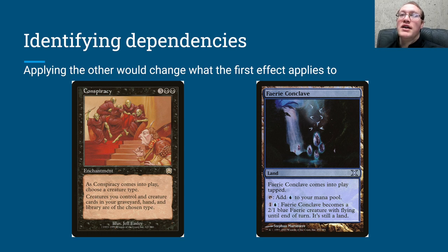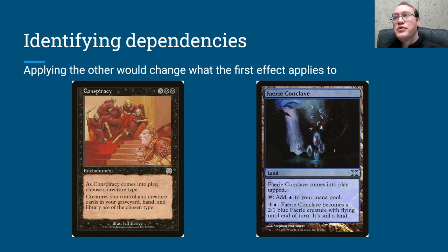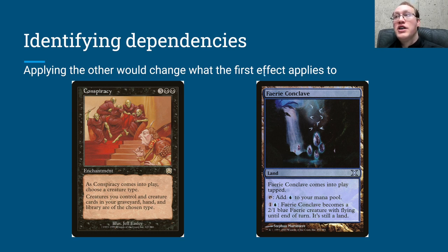Another thing that could happen: applying the other would change what the first effect applies to. Here we have Conspiracy and Fairy Conclave. These are both type, subtype, or supertype-changing effects. If we have Fairy Conclave and we animate it, that is going to change it from being a land to being a land creature. That would mean that Conspiracy — which only applies to creatures and not lands — is going to have the things it applies to changed. We go from Fairy Conclave not being affected by Conspiracy to being affected by Conspiracy. So the Conspiracy depends on Fairy Conclave, because applying Fairy Conclave would change what Conspiracy applies to.